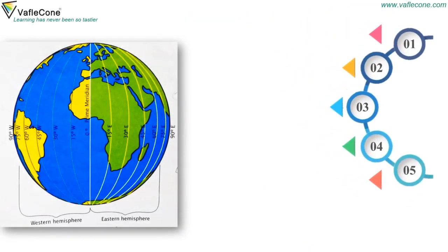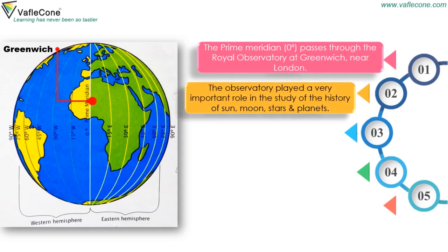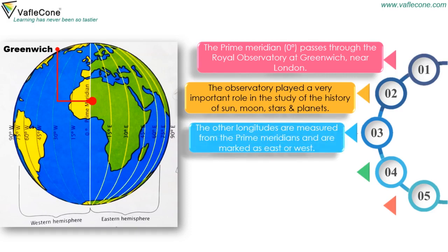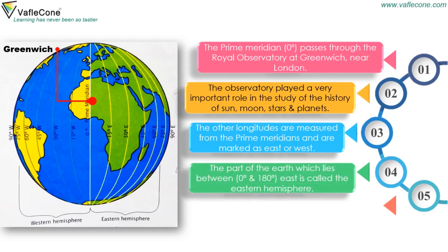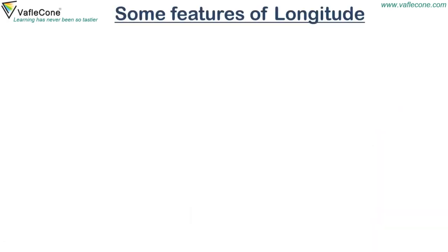The prime meridian passes through the Royal Observatory at Greenwich near London. The observatory played a very important role in the study of the history of the sun, moon, stars, and planets. The other longitudes are measured from the prime meridian and are marked as east or west. The part of the earth which lies between 0 degrees and 180 degrees east is called the eastern hemisphere, and the part between 0 degrees and 180 degrees west is called the western hemisphere.